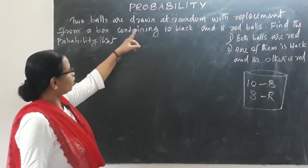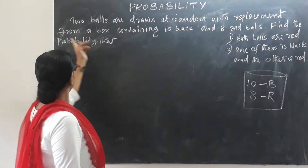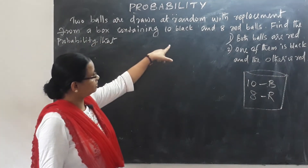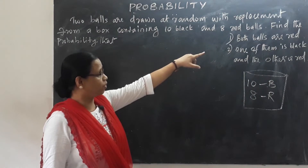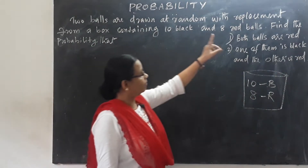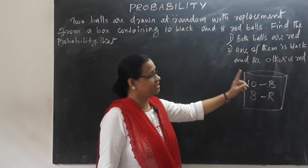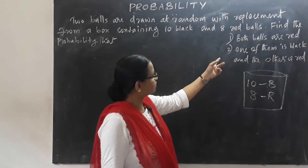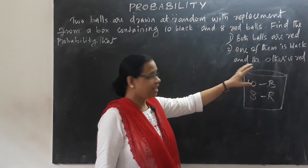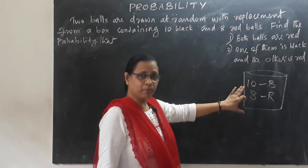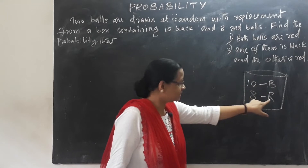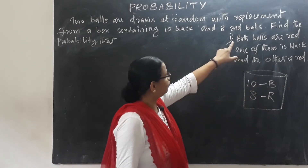Next problem: two balls are drawn at random with replacement from a box containing 10 black and 8 red balls. Find the probability that: first, both balls are red; second, one of them is black and the other is red.